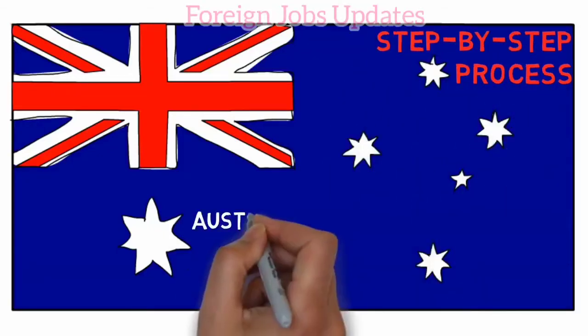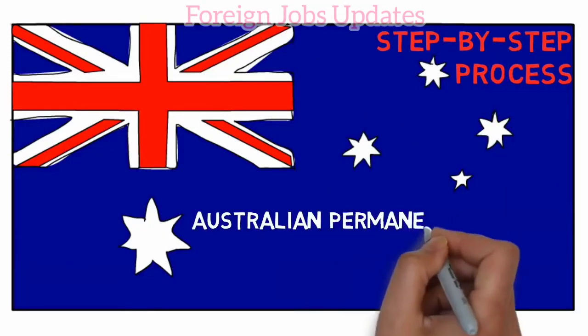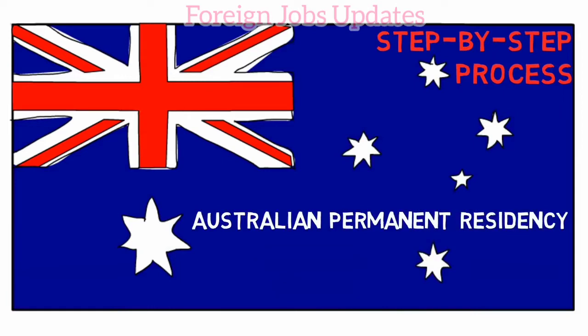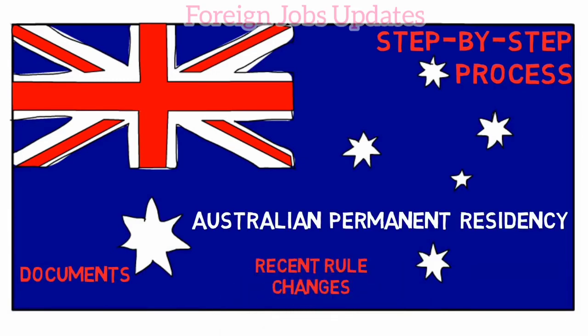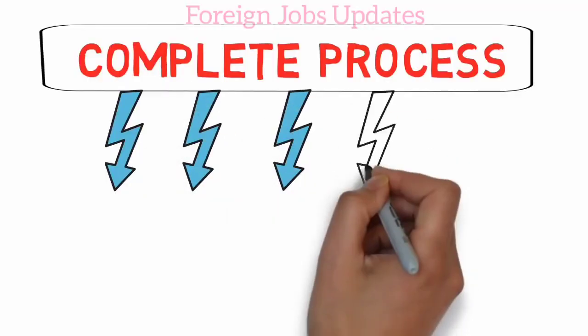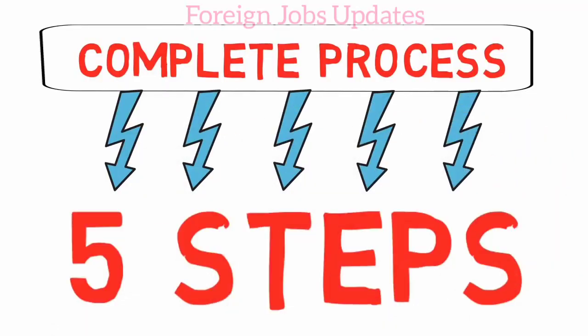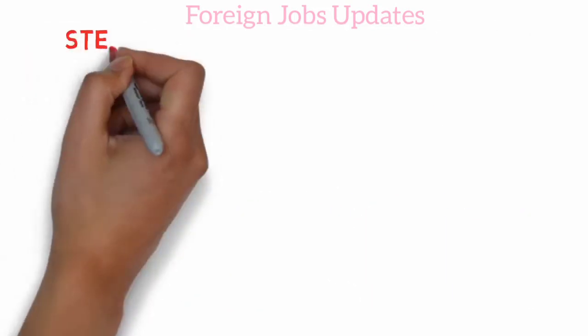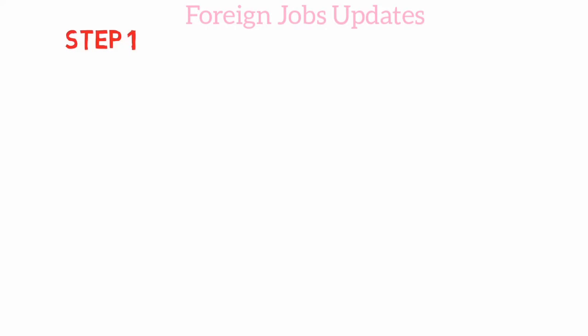This video covers the step-by-step process of Australian permanent residence. The documents and recent rules have changed. There are 5 steps in the process, and all 5 steps are mandatory. Let's look at the details of the PR grant and go through each step.